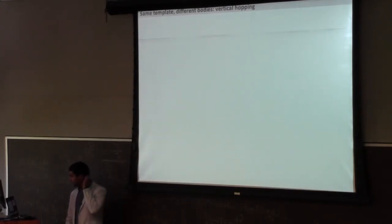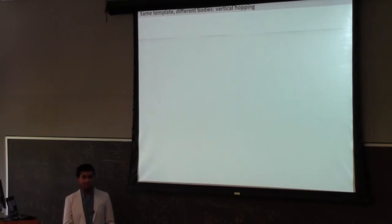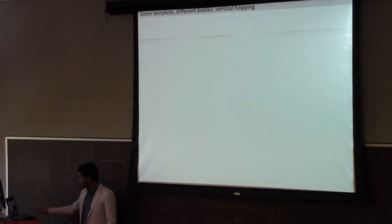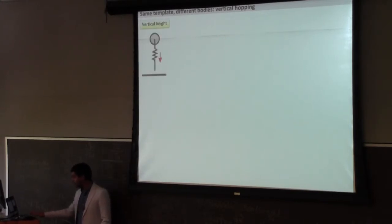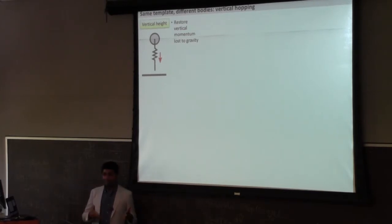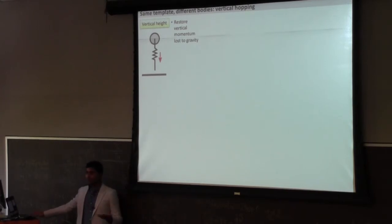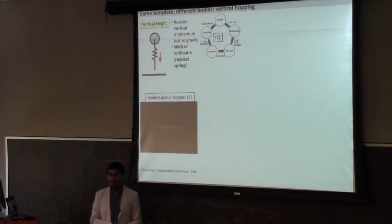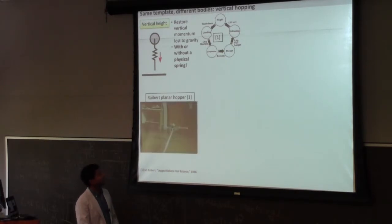Here's the first way this appears: if I know how to implement a vertical hopper template, I can now implement that on several different kinds of robots and hopefully get vertical hopping in all of them. The controller idea is that I have to restore the momentum lost to gravity. There are several ways to do that — a constant force, a spring law, or others. If you have a force actuator acting on the ground, you can apply arbitrary forces.